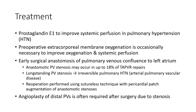Treatment includes Prostaglandin E1 to improve systemic perfusion in pulmonary hypertension. Preoperative extracorporeal membrane oxygenation is occasionally necessary to improve oxygenation and systemic perfusion. Early surgical anastomosis of the common pulmonary venous confluence to the left atrium is the definitive treatment. Angioplasty of distal pulmonary veins is often required after surgery due to stenosis.